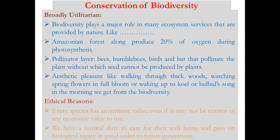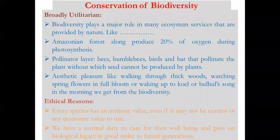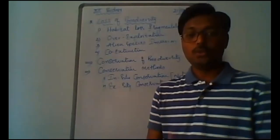Ethical reasons: every species has an intrinsic value even if it has no current economic value to us. We have a moral duty to care for their well-being and pass on our biological legacy in good order to future generations. Even phytoplanktons, not clearly visible, are major producers in pond ecosystems supplying food to all higher trophic levels. Each and every species has its own importance in nature, so we must conserve each one.